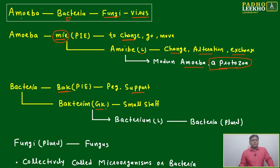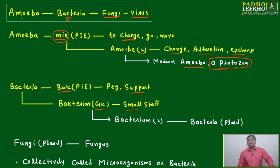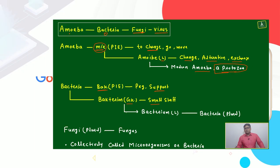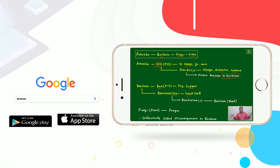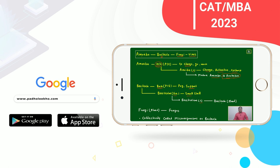The Greek root means a small staff — a smaller staff, that is called bacteria. Just imagine your office, with small small people working there — that is called bacteria. The Latin root 'bacterium' again carries this same meaning.